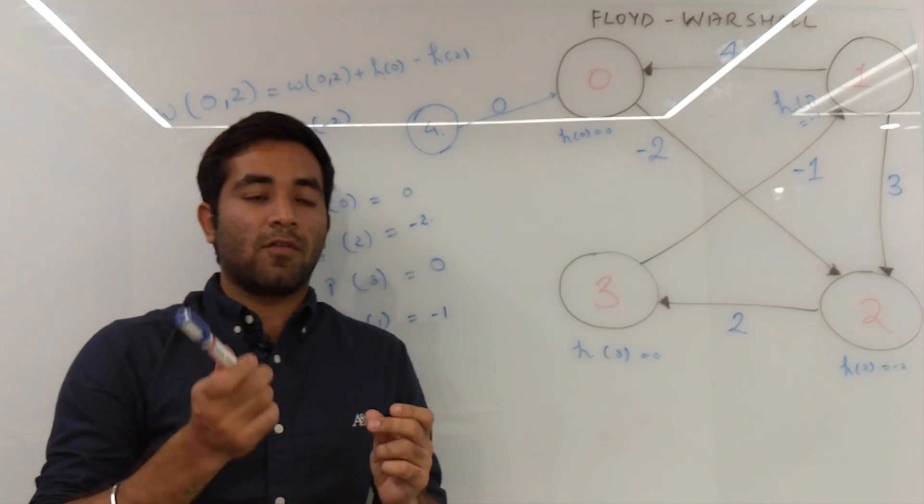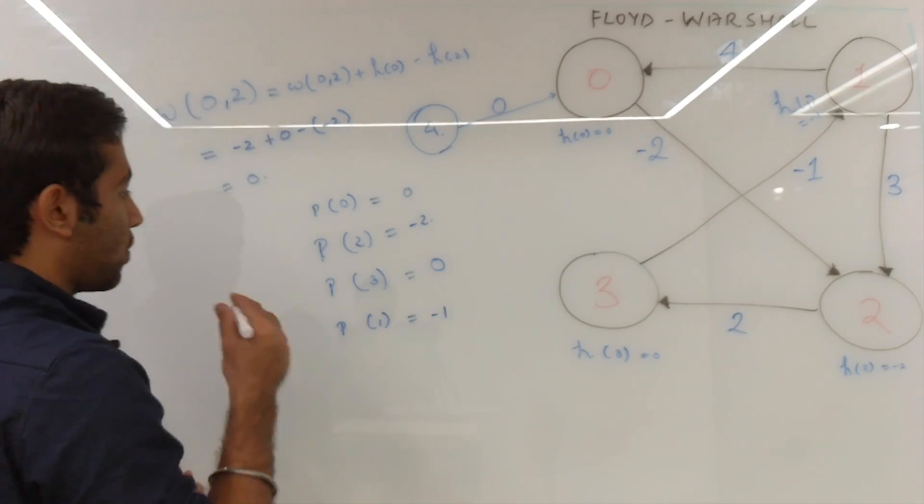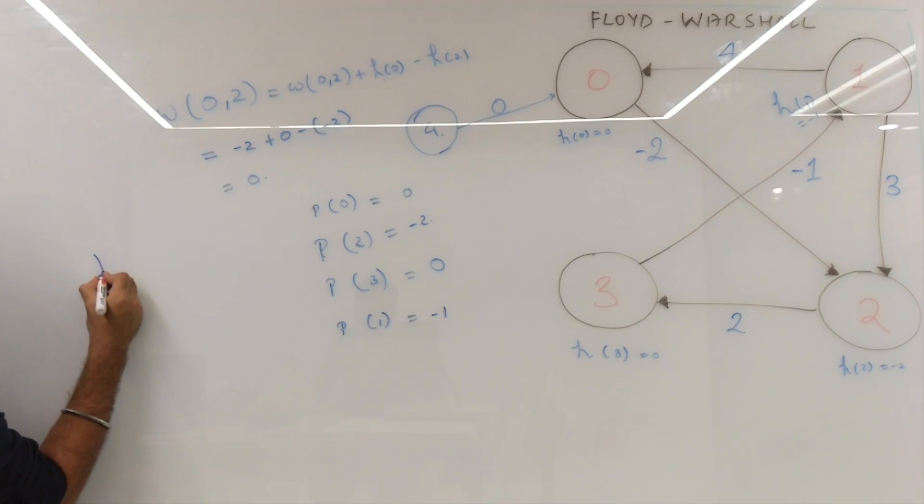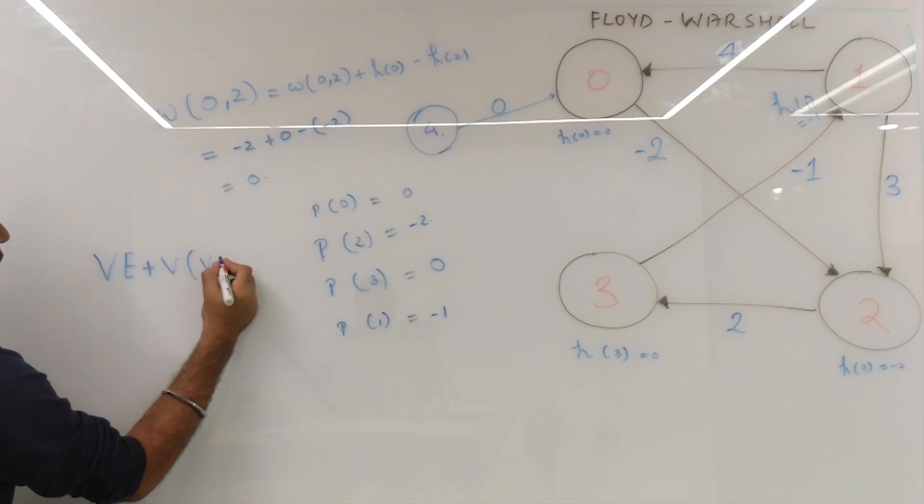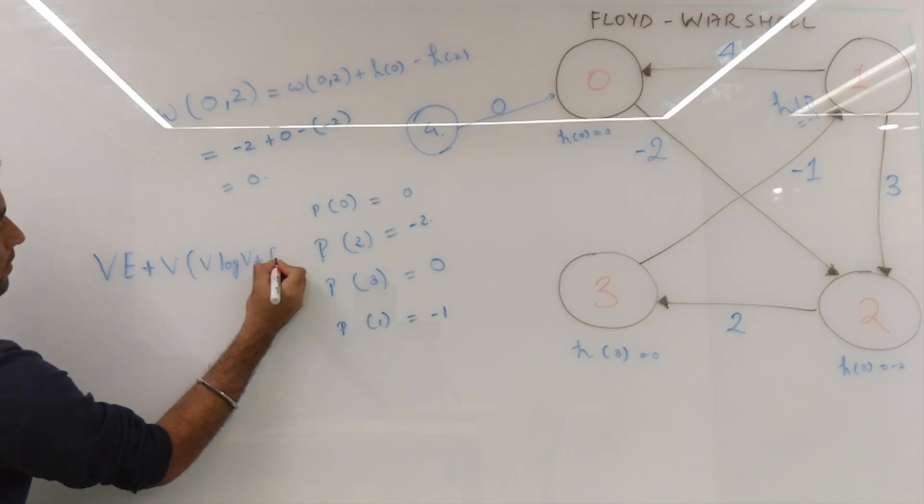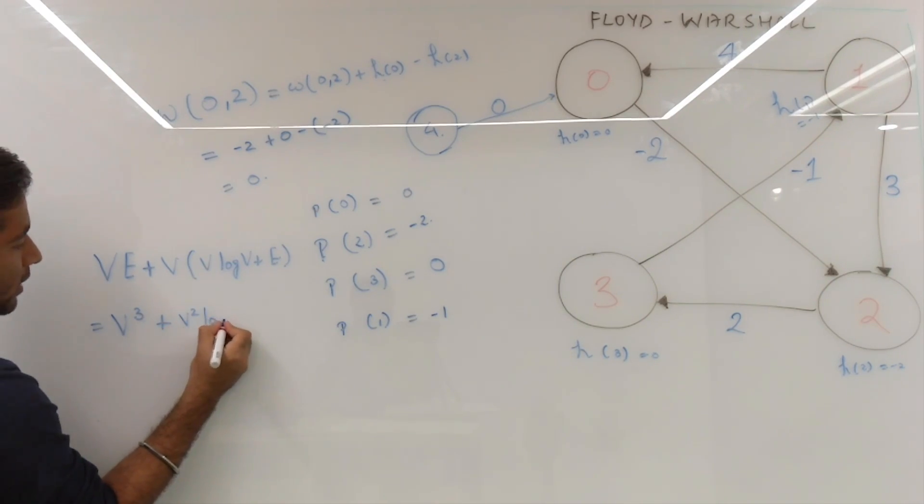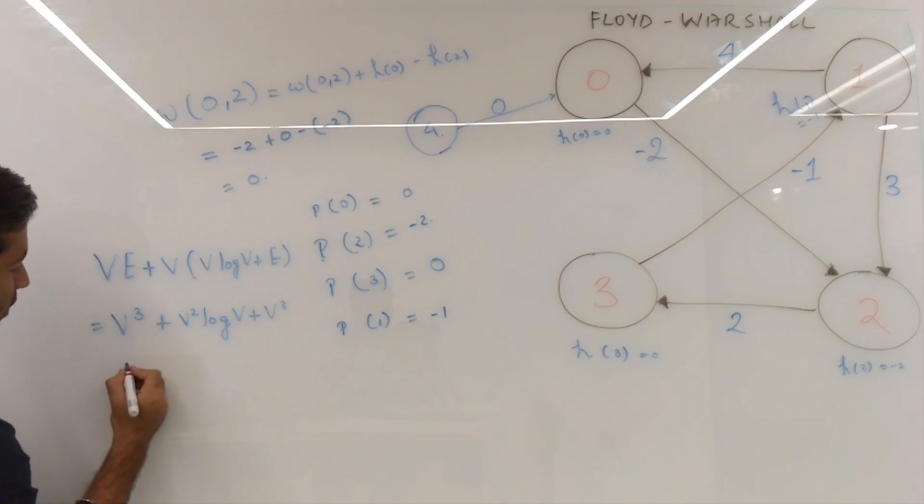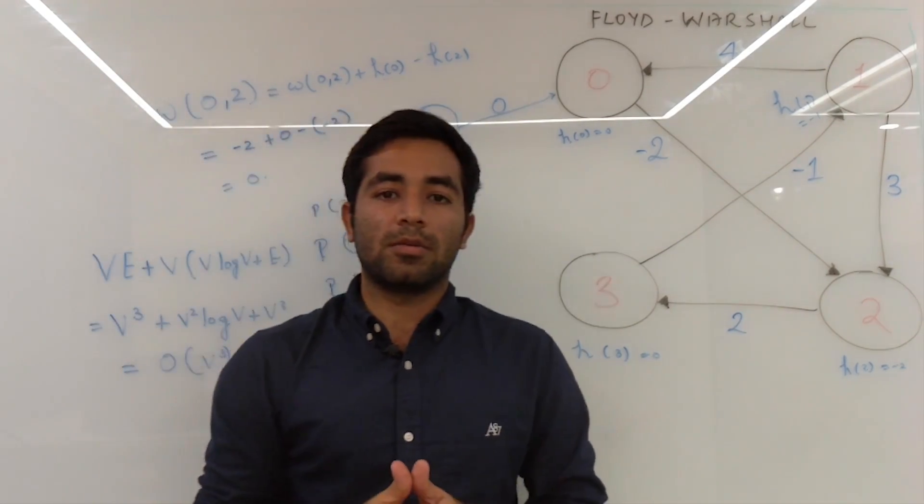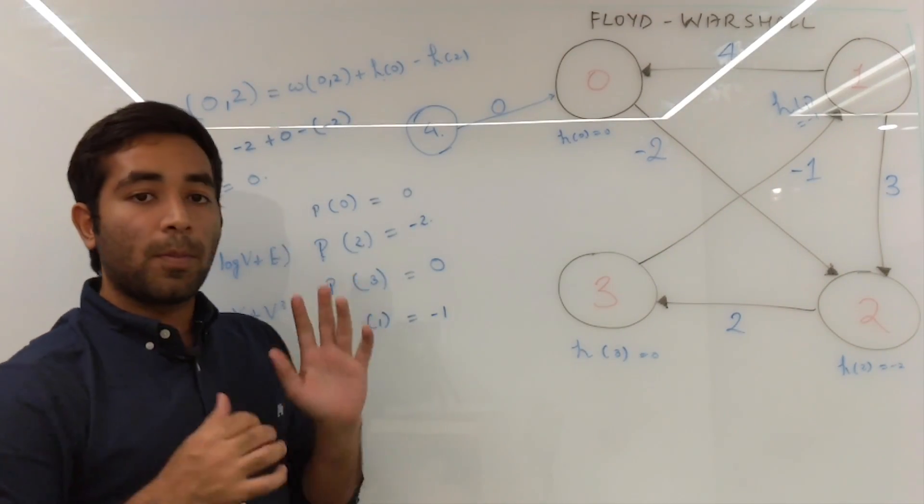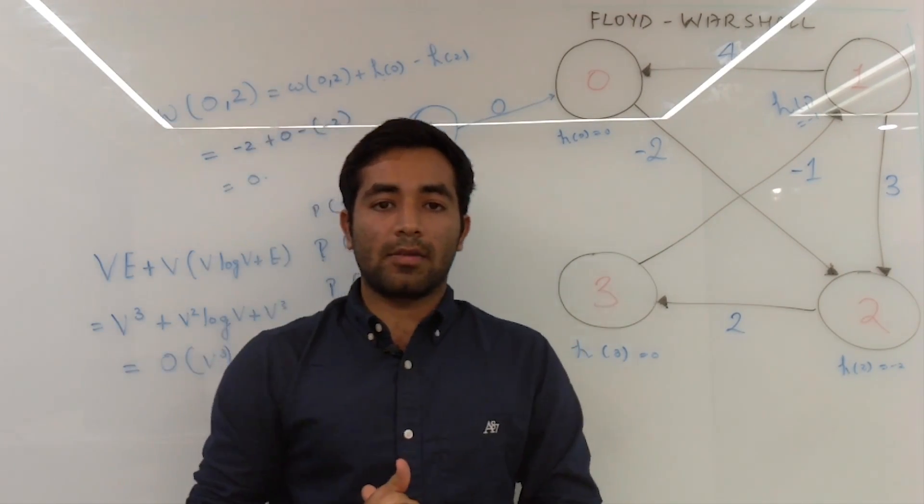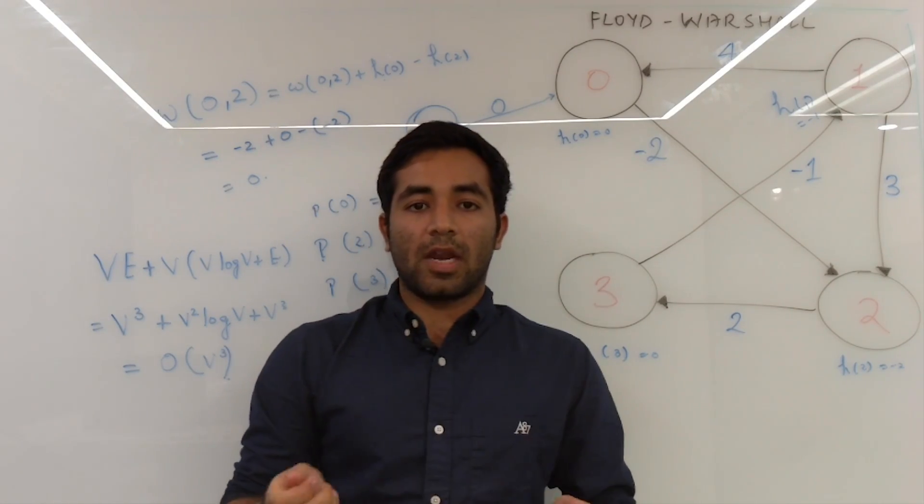This will give us the shortest path from each node to every other node. So the complexity of this algorithm will be for running Bellman-Ford initially we use V plus E and for running Dijkstra for each vertex we will have V into V log V plus E which is in the worst case where E equals to V squared we have V cube plus V squared log V plus V cube which is O of V cube. Now as I explained earlier we won't be using this algorithm because it's pretty difficult to implement it as compared to Floyd-Warshall and we will now jump on to the Floyd-Warshall algorithm and try to explain how it works.